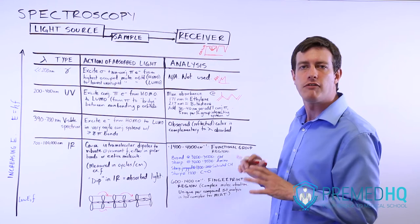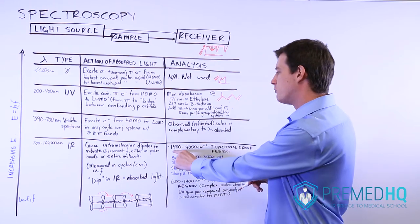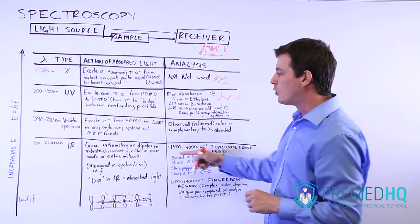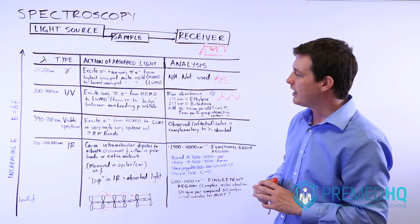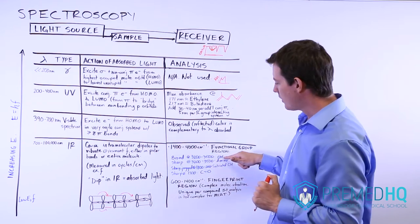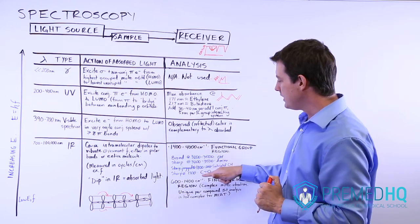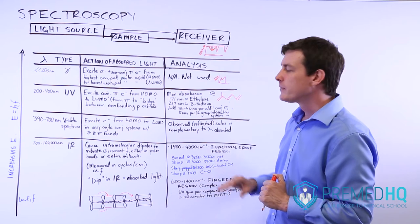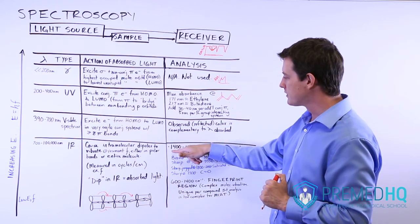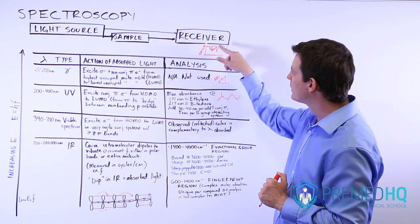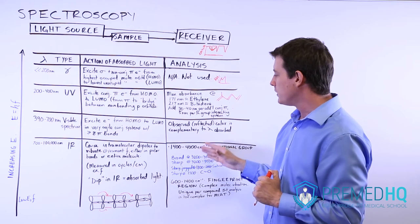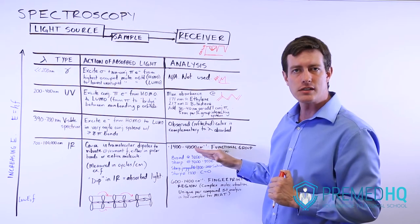These key absorption values all fall within the functional group region, which ranges from about 1400 to 4000 cm⁻¹. This corresponds with the energy level of infrared light that causes those polar bonds — OH bonds, C=O bonds — to vibrate at their resonant frequency. If you see a dip in this 1400 to 4000 range, it will tell you a lot about what functional groups are present.